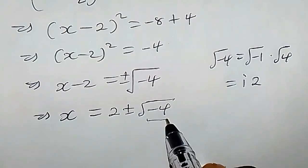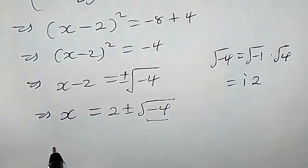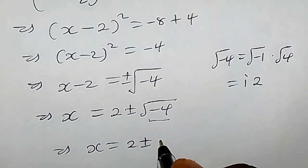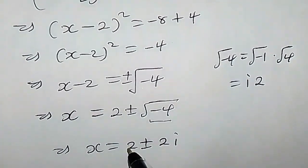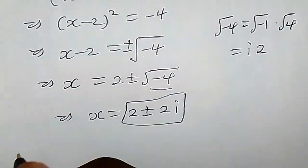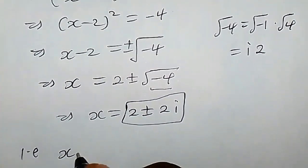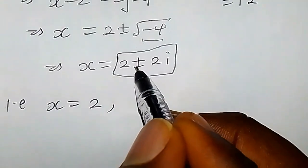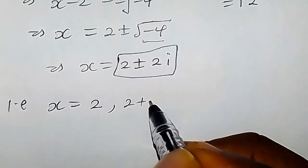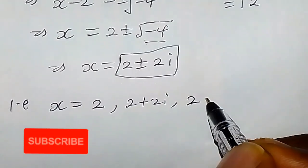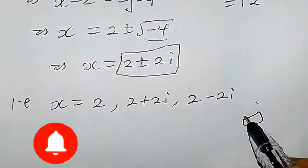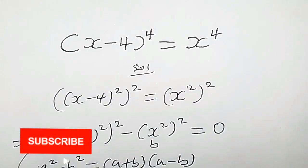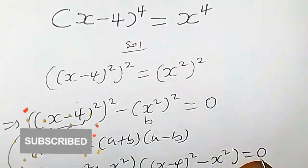Replacing the square root of negative 4 with 2i, we get x equals 2 plus or minus 2i. So the complete set of solutions is x equals 2, x equals 2 plus 2i, and x equals 2 minus 2i. These are the required solutions for this quartic equation. Thanks for watching.